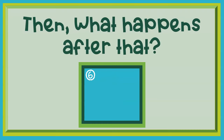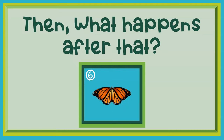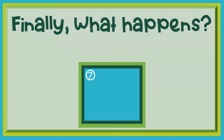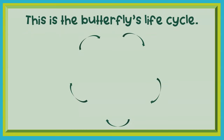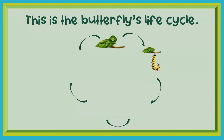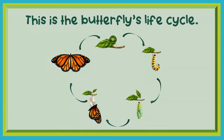Then what happens? An adult butterfly is ready to fly. Finally, what happens? The adult butterfly lays an egg so that the life cycle can start all over. This is the butterfly's life cycle: egg, caterpillar, chrysalis, butterfly emerging, adult butterfly.